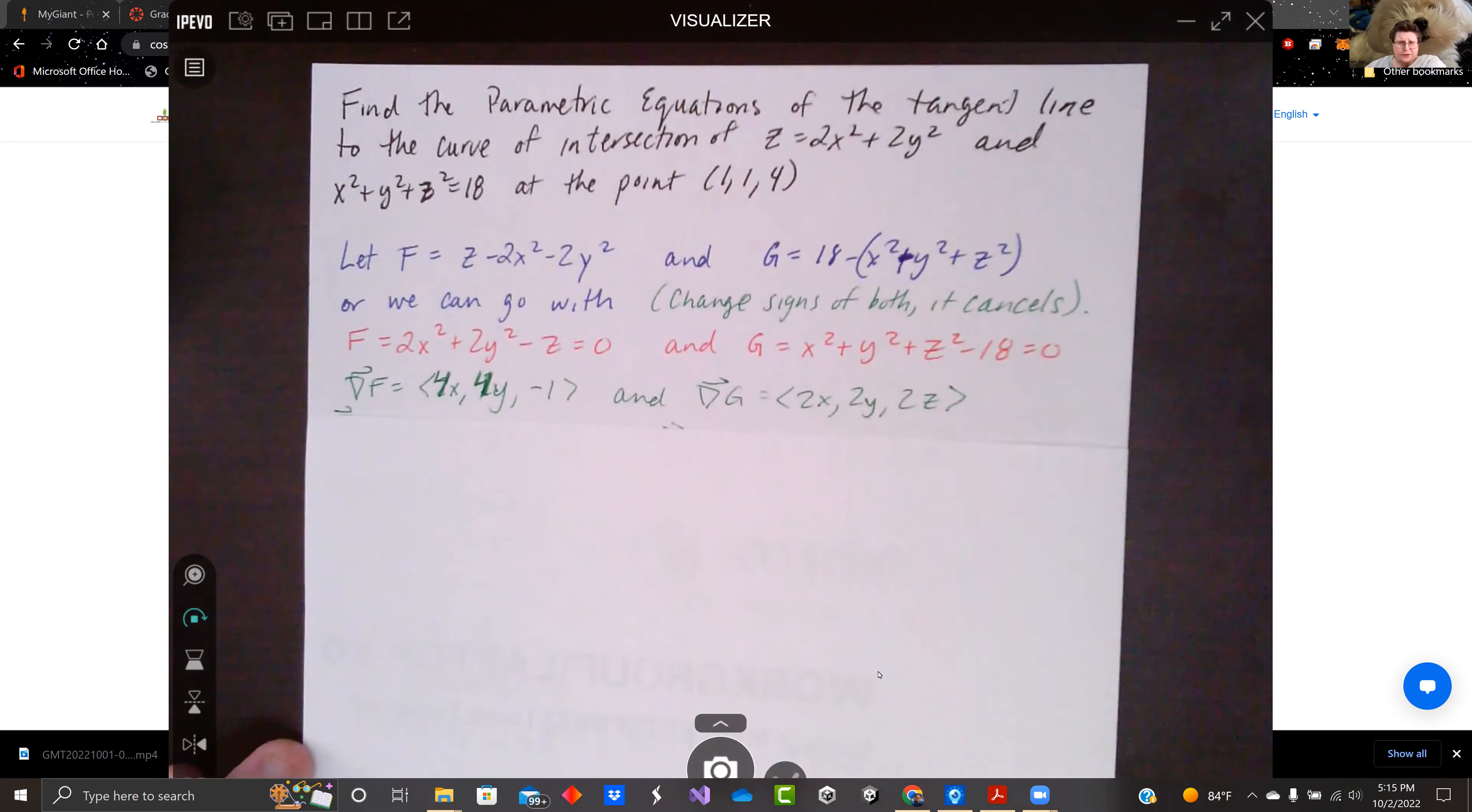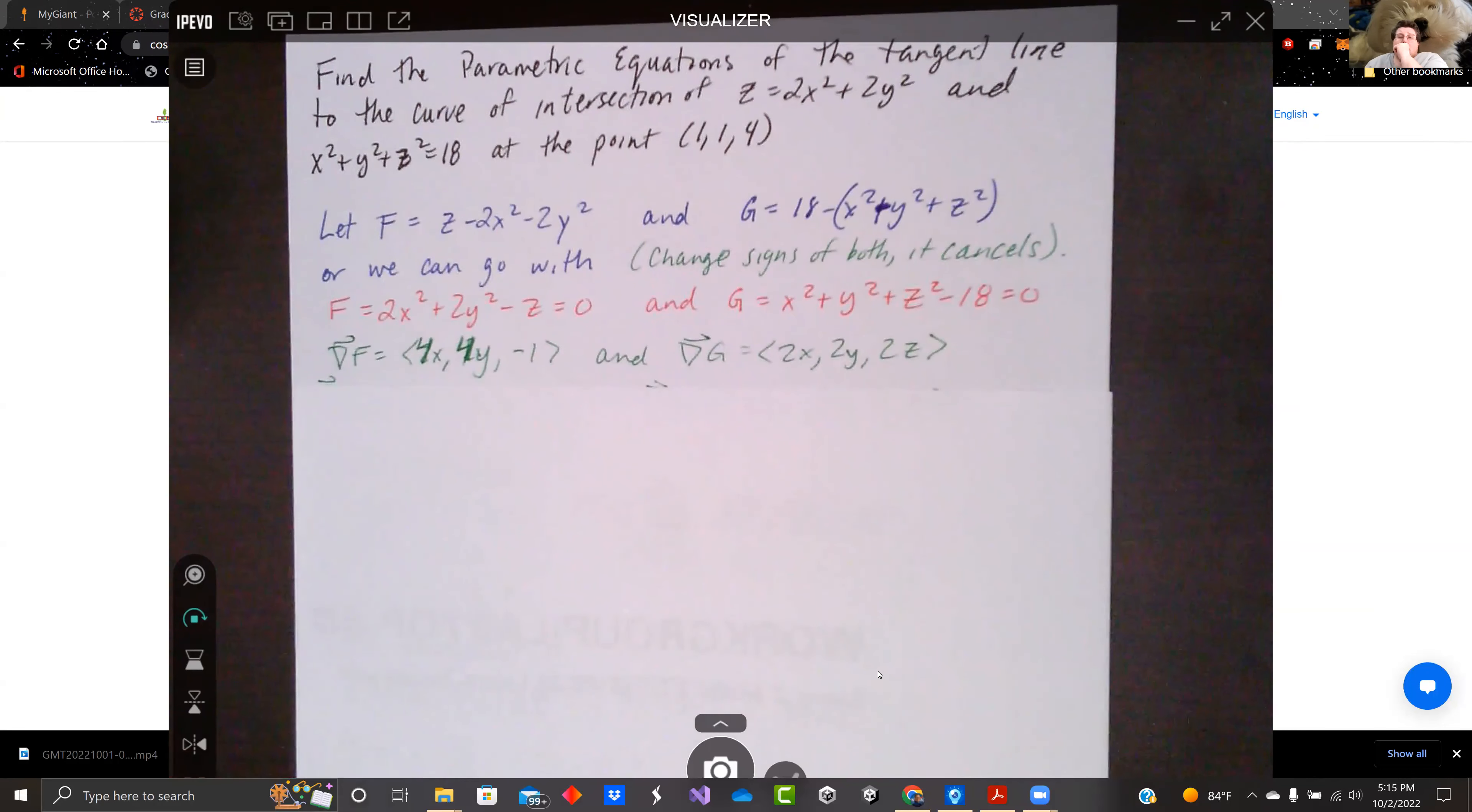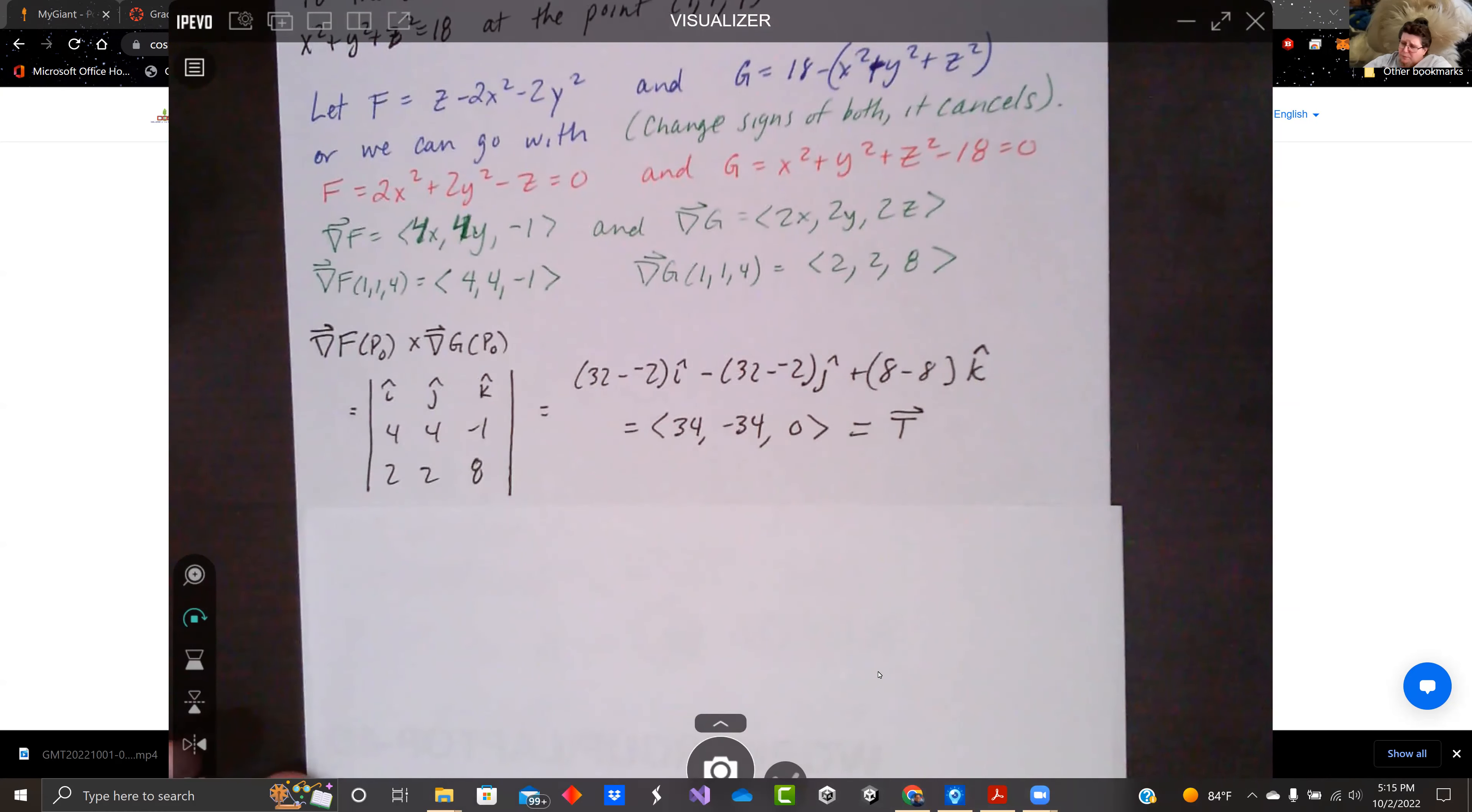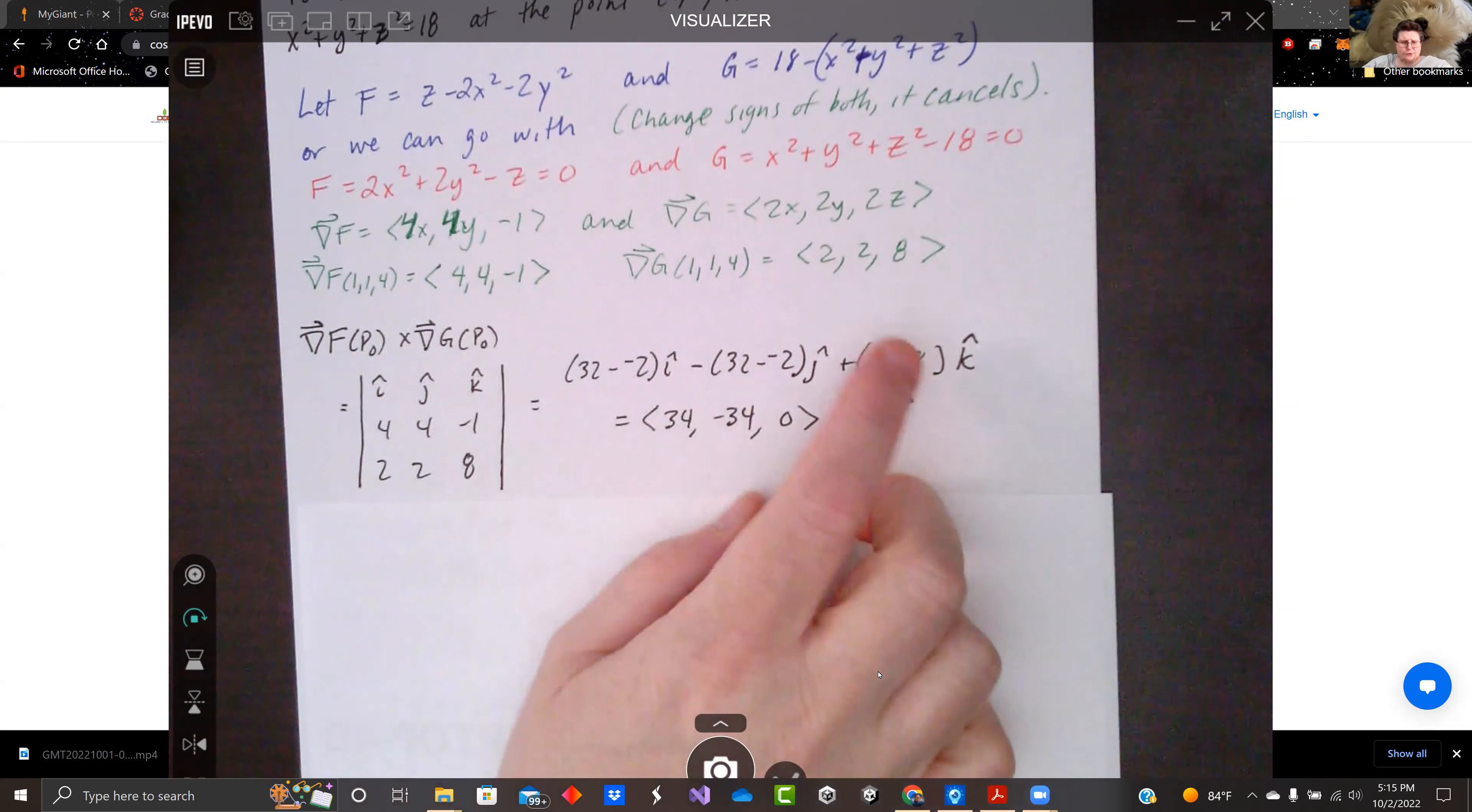And we take the gradient. We have 4X, 4Y, and negative one for F. And the gradient of G is 2X, 2Y, and 2Z. We cross it, evaluating at P0. So let's just plug in P0 first. We'll get 4, 4, and negative one. 2, 2, and 8.